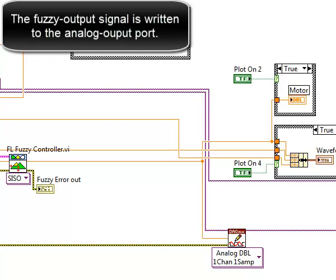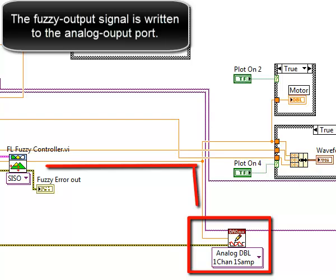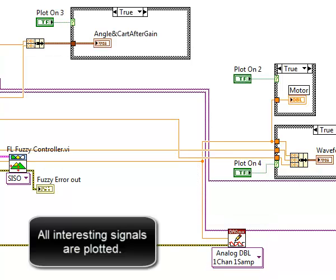A gain is applied and given to the fuzzy angle controller. The fuzzy output signal is written to the analog output port. All interesting signals are plotted.